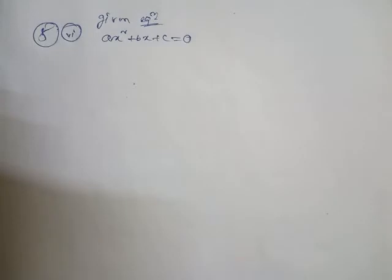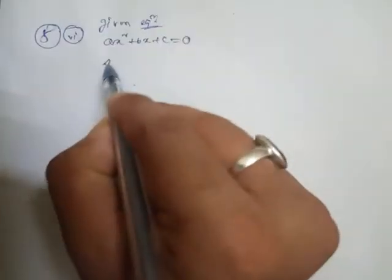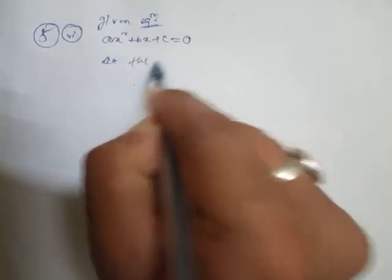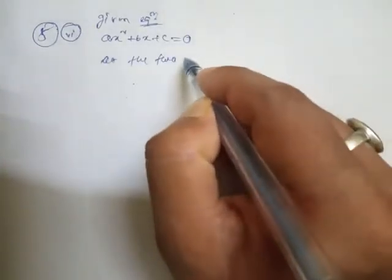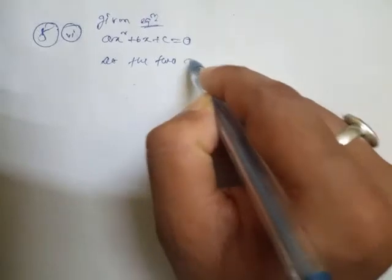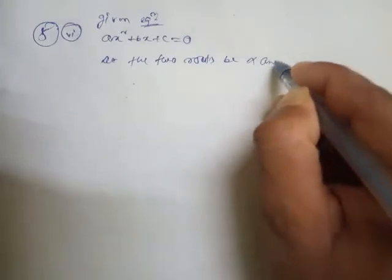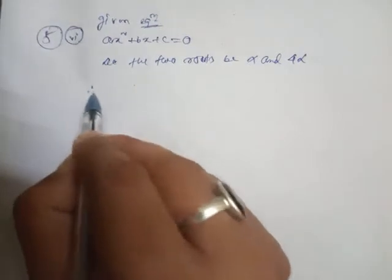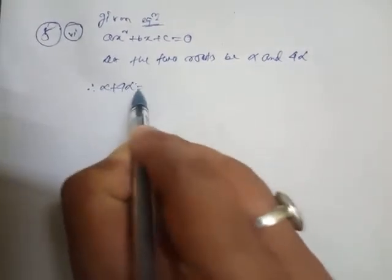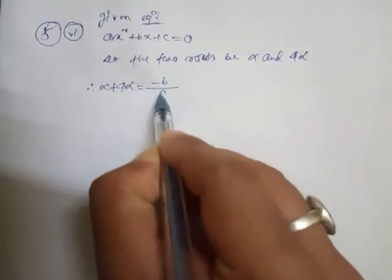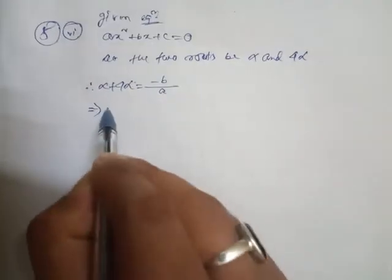Now, let the two roots be alpha and four alpha — because one root is four times the other. The sum of the roots means alpha plus four alpha equals minus b by a.